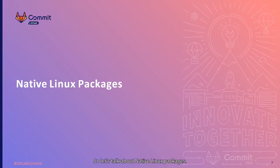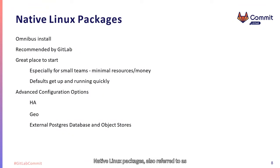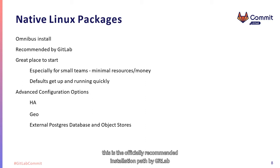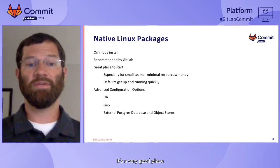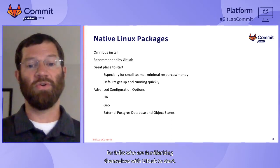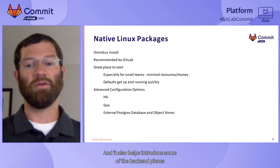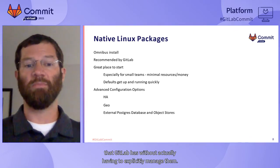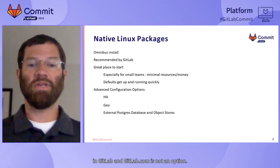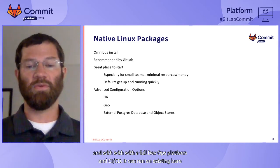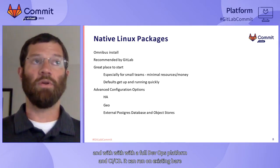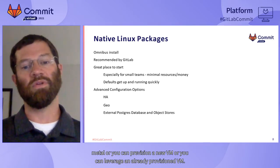Let's talk about native Linux packages. Also referred to as the Omnibus package or Omnibus install, this is the officially recommended installation path by GitLab for the majority of customers that need an on-prem installation or just want to play around on their local machine. It's a very good place for folks who are familiarizing themselves with GitLab to start. It can run on existing bare metal, or you can provision a new VM or leverage an already-provisioned VM.